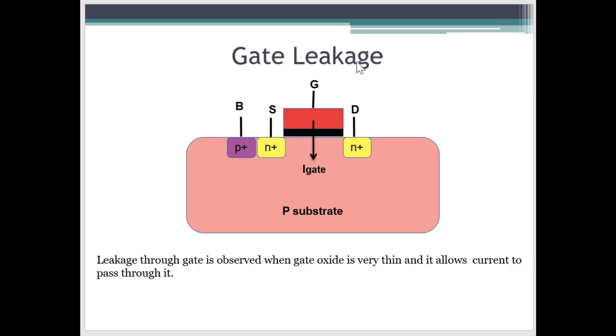Now, let's move on to gate leakage. As the name suggests, it is the leakage that happens through gate. Basically when this gate oxide is very thin that it allows the current to pass through it, then it leads to gate leakage current.